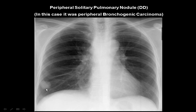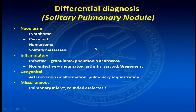A pulmonary nodule may be solitary or multiple, peripheral or central, so we have to describe it well. This is a posterior-anterior plain X-ray film showing a well-defined peripheral solitary pulmonary nodule of soft tissue density. A solitary pulmonary nodule may be — like any lesion in the body — neoplastic, inflammatory, congenital, or miscellaneous. Neoplastic includes lymphoma, carcinoma, hamartoma, or solitary metastasis. Inflammatory includes infectious or non-infectious causes. Congenital includes AV malformation, pulmonary sequestration, or pulmonary infarct. All these diseases may present as a pulmonary nodule.